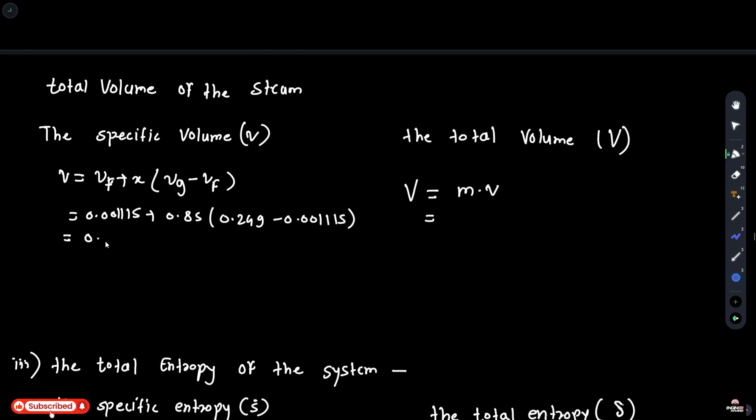The specific volume is 0.204167. And the total volume is M is 2 multiplied by 0.204167, which is equal to 0.408334 metre cube.